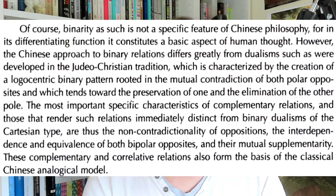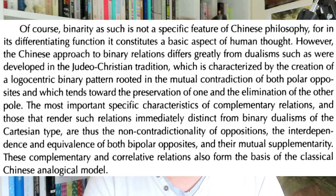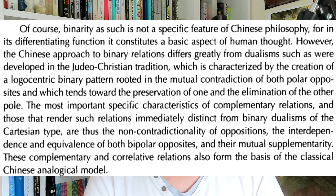This becomes much easier to understand if we realize that binaries often aren't oppositional but rather speak to a complementary system. Rosker writes: 'Binarity as such is not a specific feature of Chinese philosophy, for in its differentiating function it constitutes a basic aspect of human thought. However, the Chinese approach to binary relations differs greatly from dualism such as they were developed in the Judeo-Christian tradition, which is characterized by the creation of logocentric binary pattern rooted in the mutual contradiction of both polar opposites and which tends towards the preservation of one and the elimination of the other pole.' Basically it goes on to say that this other type of binary in eastern philosophy is more about the two working together — yin and yang obviously. For the record, I think this is wrong. I don't accept that western thought always imagines binaries as oppositional, nor do I necessarily accept that eastern thought always considers binaries to be complementary. Rather, I would say that there are some binaries that are more oppositional and there are some binaries that are more cooperative. I'd even maybe go so far as to say that this distinction between opposition and cooperation exists itself on a spectrum, funnily enough.